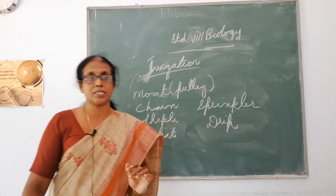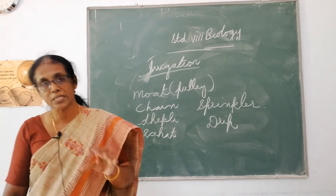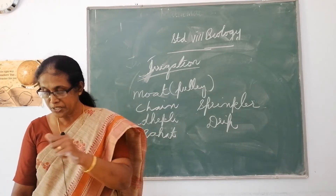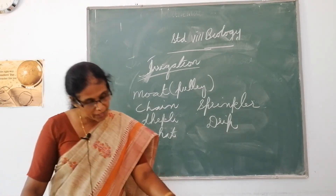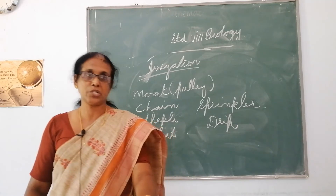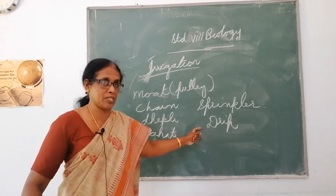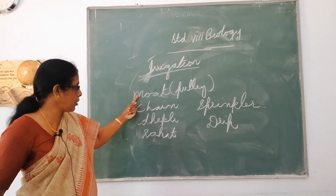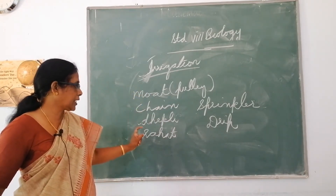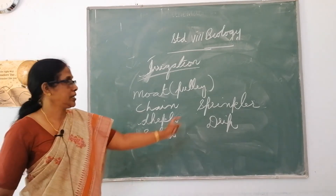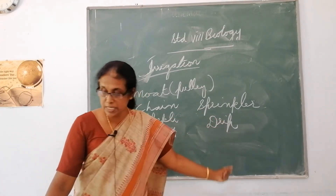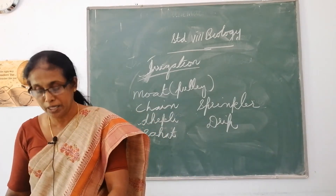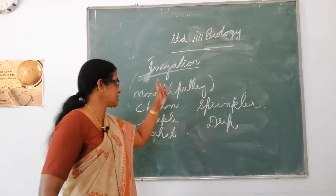That is the sprinkler system. In the drip system, the water falls drop by drop just at the position of the root. So the traditional methods are moth, chain, dhekli, and the rahat system. The modern methods are the sprinkler system and the drip system. The supply of water to the crops at regular intervals is known as irrigation.